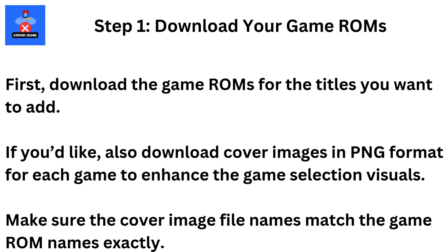Step 1: Download your game ROMs. Download the game ROMs for the titles you want to add. If you'd like, also download cover images in PNG format for each game to enhance the game selection visuals. Make sure the cover image file names match the game ROM names exactly.